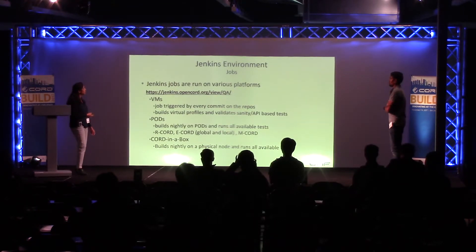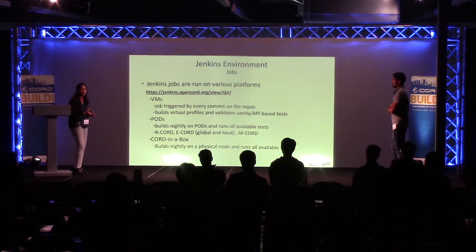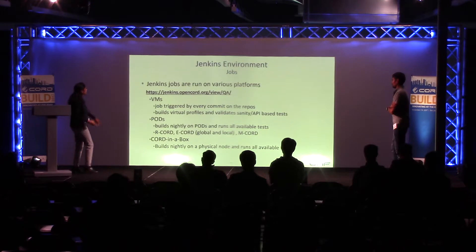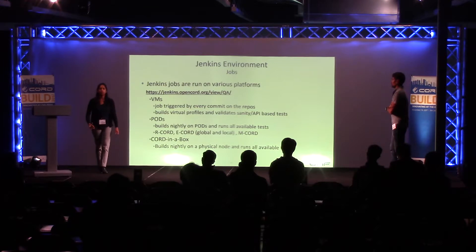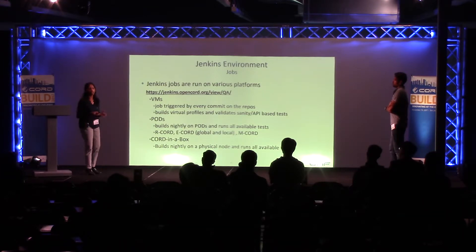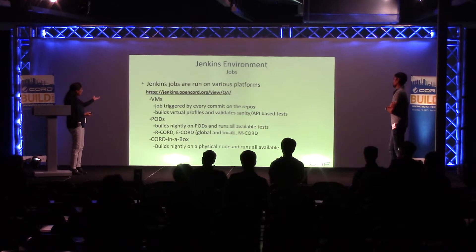There are lots of jobs we have at ONF. If you are interested in what types of jobs we have and what tests we are running, the link is jenkinsopencord.org. Go to the QA view and you'll find many jobs you can inspect and check. This slide summarizes what we are running across pods, VMs, and the CORD-in-a-Box system.